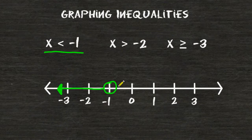Now notice that we did not shade in the circle that we drew directly above negative 1 and that's because negative 1 is not included as a possible solution for this inequality. For example,